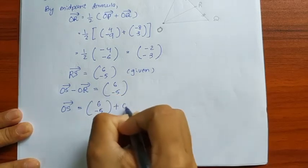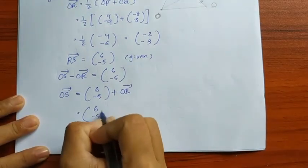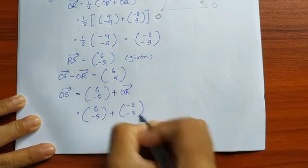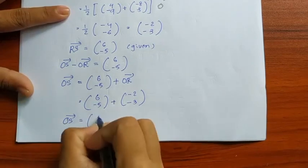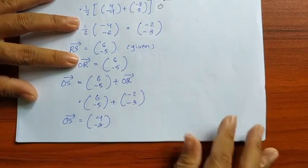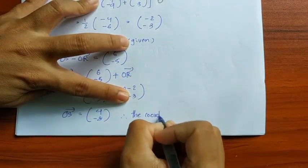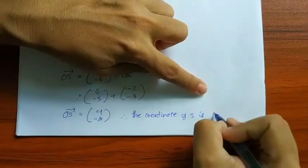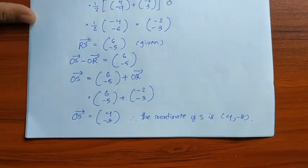6 minus 5 plus Beta O equals negative 2 minus 3. Beta O equals 6 minus 2 equal to 4; minus 5 minus 3 equals negative 8. So the coordinates of S are 4, negative 8.